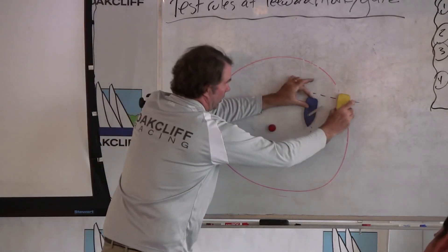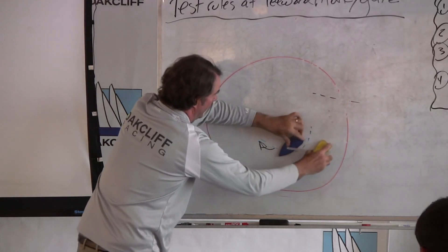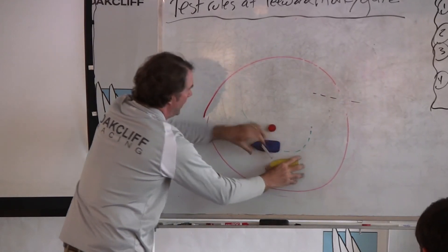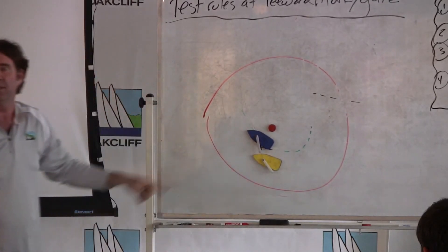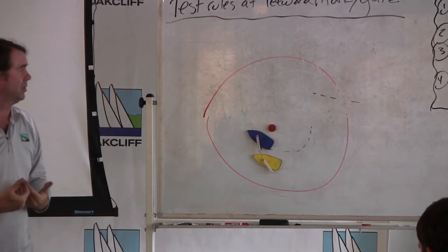Yellow comes in from astern. The boats are going around the mark. Yellow knows she has luffing rights, but she wants to know when can she assert them.